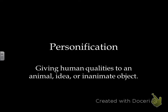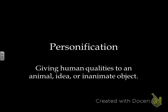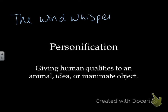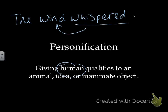Personification is giving human qualities to an animal, idea, or inanimate object. For example, 'the wind whispered' — whispering is something that a human does, not the wind. So we're giving a human-like quality to something non-human. A good way to remember this is that you can see the word 'person' right inside the word 'personification.'